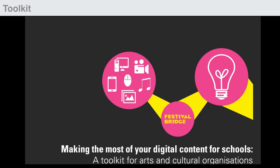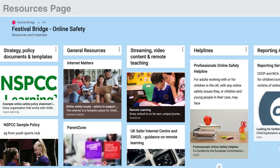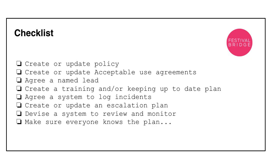Alongside this presentation there is also the toolkit itself — here it is, 'Making the Most of Your Digital Content for Schools' — and we'll also separate out the online safety section within that as a separate file. I've put a PDF of the slides in the section so you might want to print those off. All the resources and materials that I mention, I've pulled out the links into a separate document so you don't have to write them all down; they're all there and labelled for you. And there's also a checklist so you can work through some of the things I've talked about and tick them off as you go.